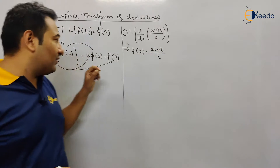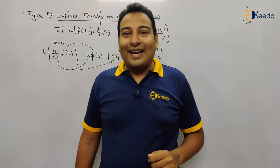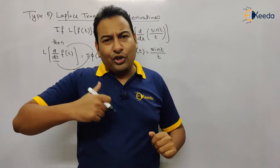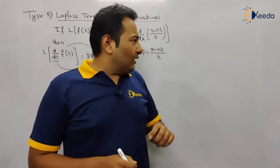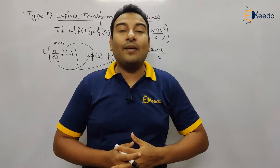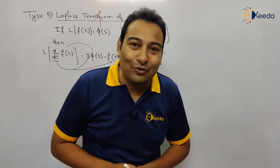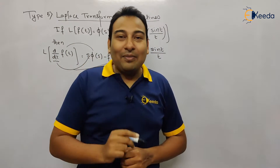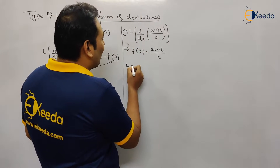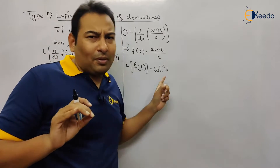First we need to find the Laplace transform of f(t), that is φ(s). So we need Laplace of sin t / t. You may remember from Type 4, Problem 1 — I'm directly writing the answer. Forget about the division by t; you're left with sin t, whose Laplace is 1/(s²+1). Due to the division by t, integrate 1/(s²+1) from s to infinity, giving tan⁻¹(s) evaluated: π/2 − tan⁻¹(s) = cot⁻¹(s). So φ(s) = cot⁻¹(s).